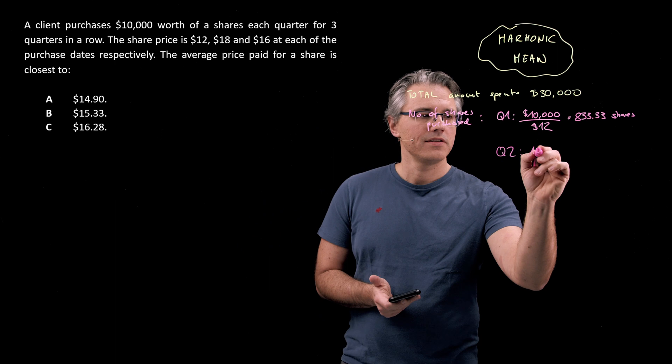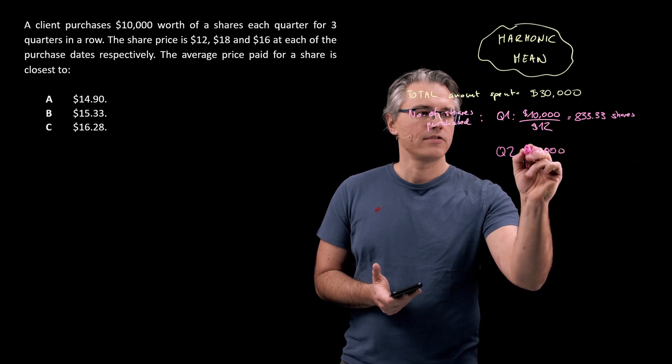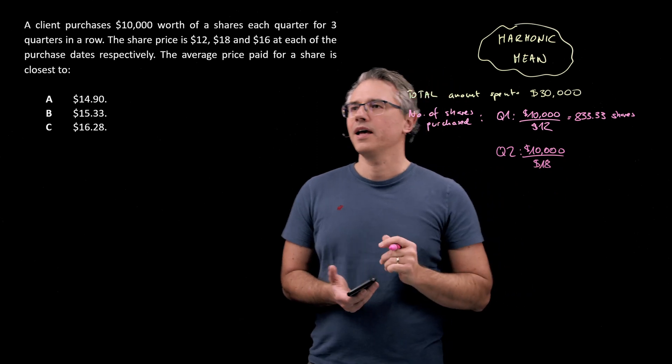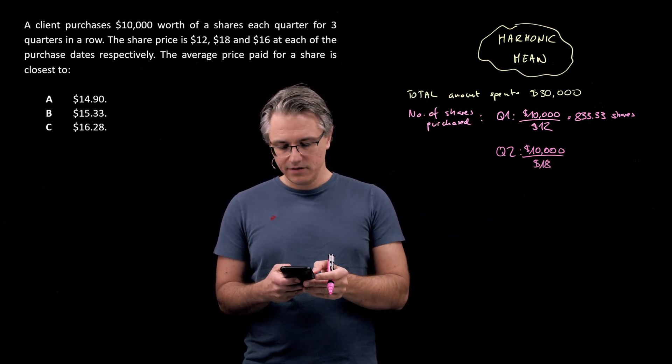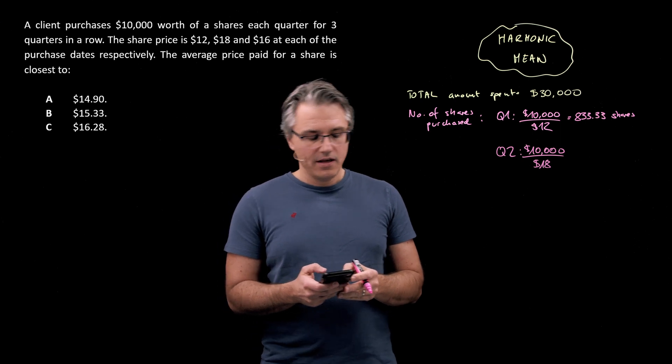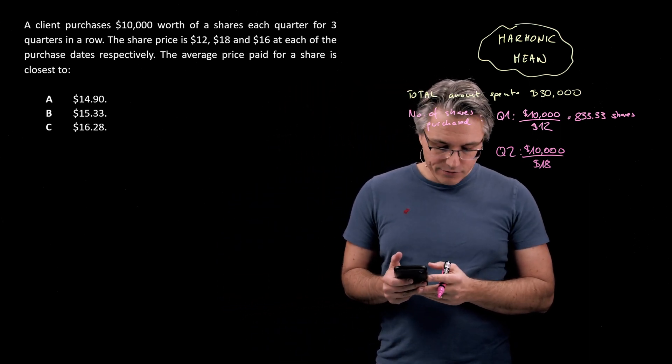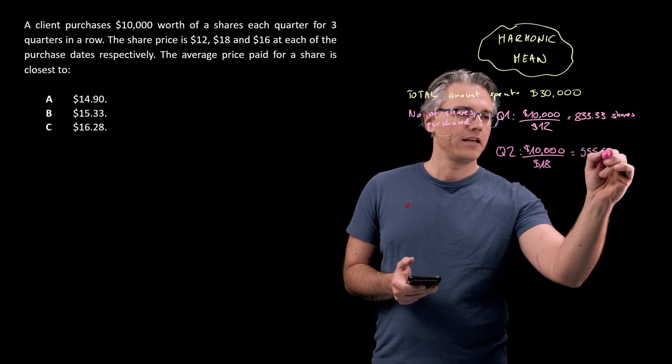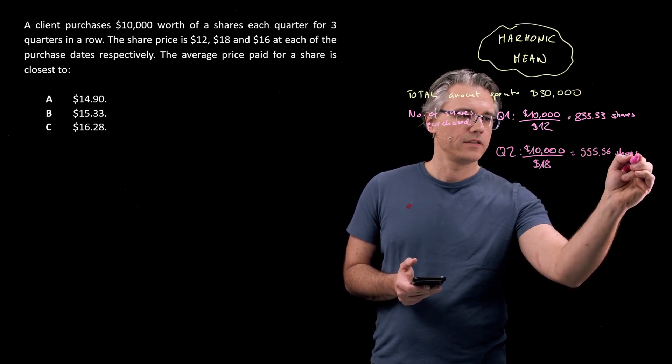Now, for Q2, something similar. Spent $10,000, but this time the price at which the buying happens is $18. So $10,000 divided by 18 equals 555.56 shares.